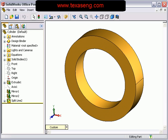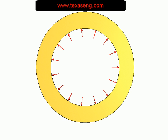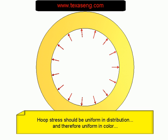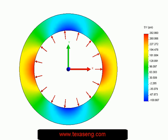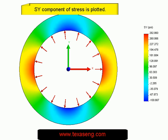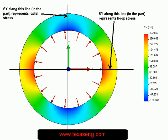Suppose we have this cylinder that is loaded with an internal pressure. We expect the hoop stress to be uniform in distribution and therefore uniform in color on the stress plot. However, when you plot a stress component other than von Mises stress, such as SY, you see a non-uniform color distribution.